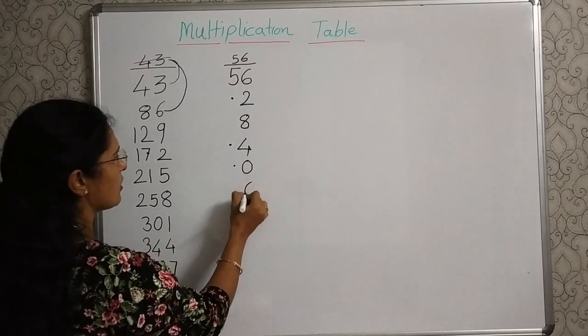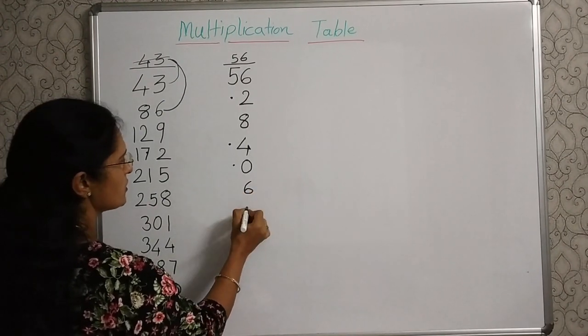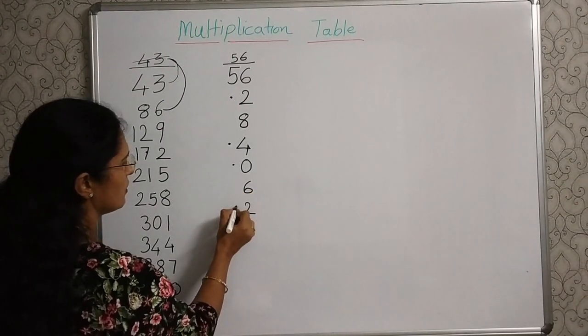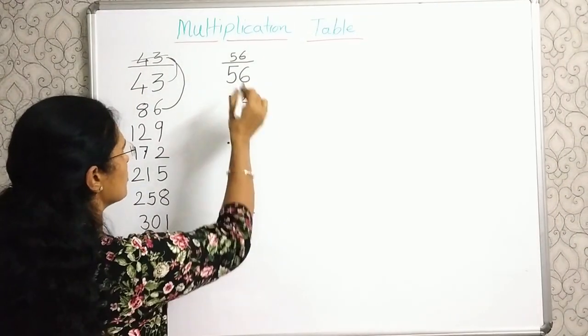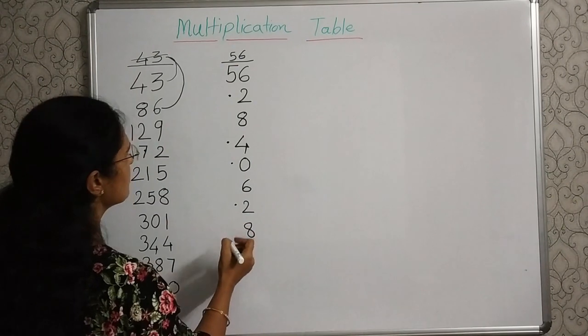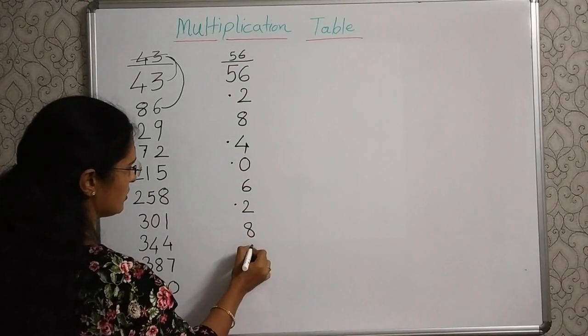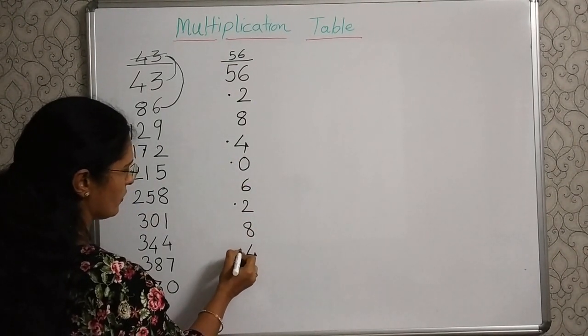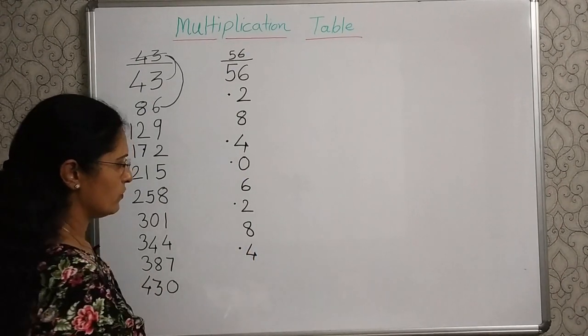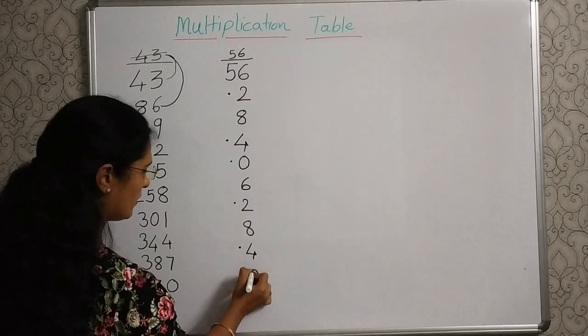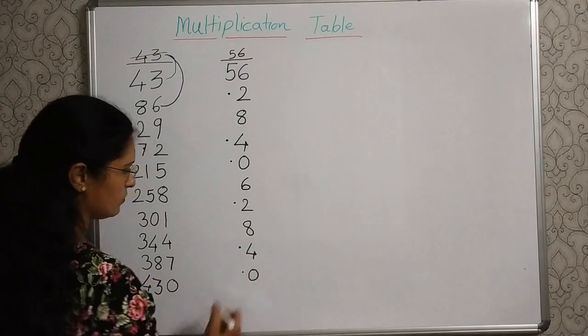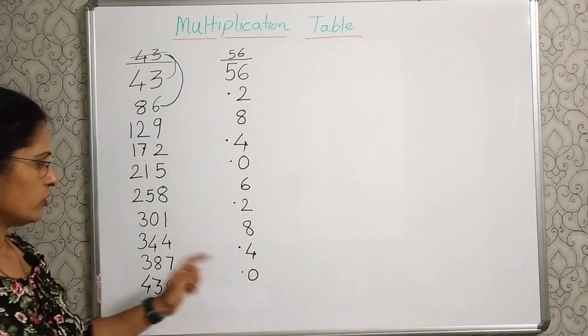0 plus 6, 6. 6 plus 6, 12. Again, the carryover dot here. 2 plus 6, 8. 8 plus 6, 14. Again, the carryover dot is here. 4 plus 6, 10. And now, this is carryover dot.